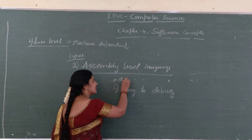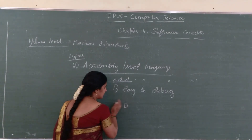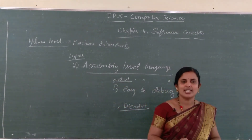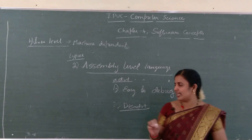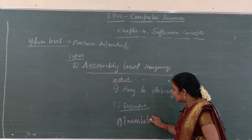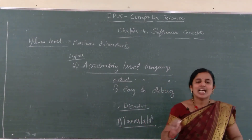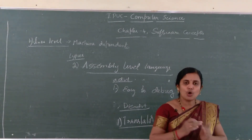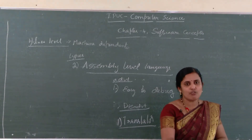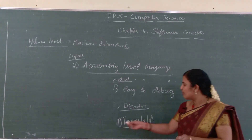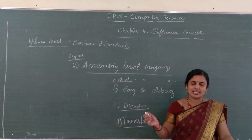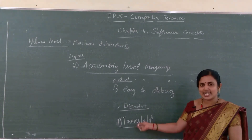What is the disadvantage of assembly level language? Assembly level language is not directly understood by the machine, so we need a translator. The translator is important here because assembly language is not understood by the machine. So whatever we write in assembly level programming must be converted into machine-understandable form, and to do that we require a translator. That is actually a disadvantage.